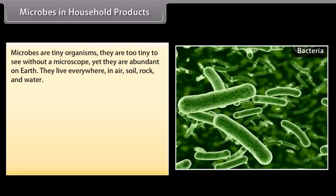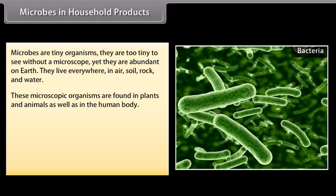Microbes in household products. Microbes are tiny organisms. They are too tiny to see without a microscope, yet they are abundant on earth. They live everywhere — in air, soil, rock, and water. These microscopic organisms are found in plants and animals, as well as in the human body.